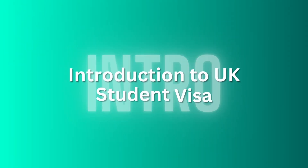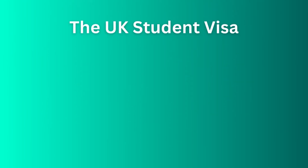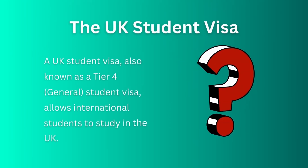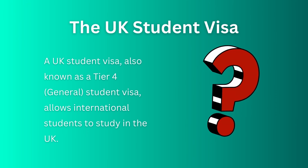Let's start with the introduction to the UK student visa. We need to first understand what it is. A UK student visa, also known as a Tier 4 general student visa, allows international students to study in the UK.